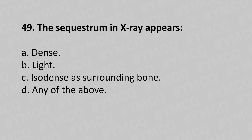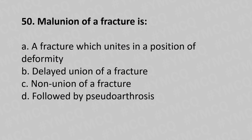Moving to our 49th question: the sequestrum in an X-ray appears option A dense, option B light, option C isodense as the surrounding bone, option D any of the above. The answer is option A dense.